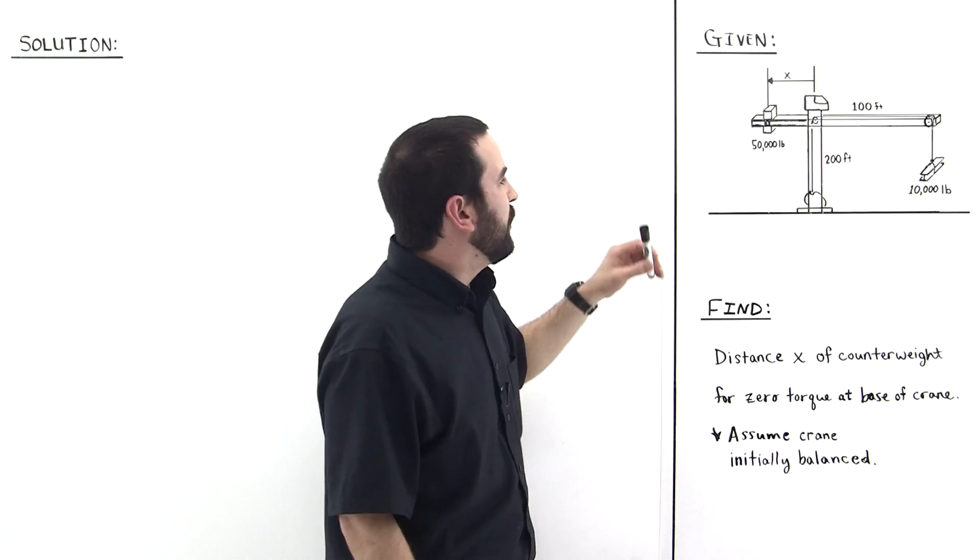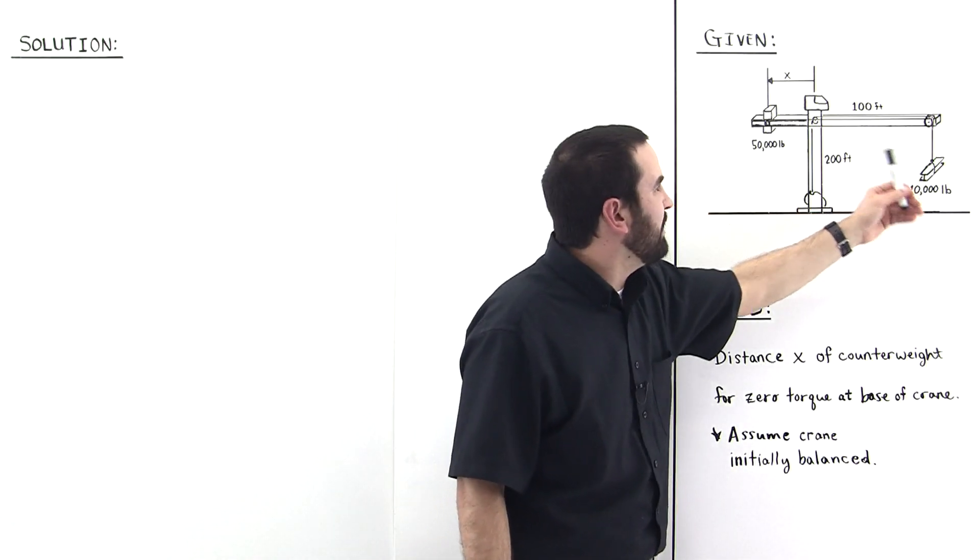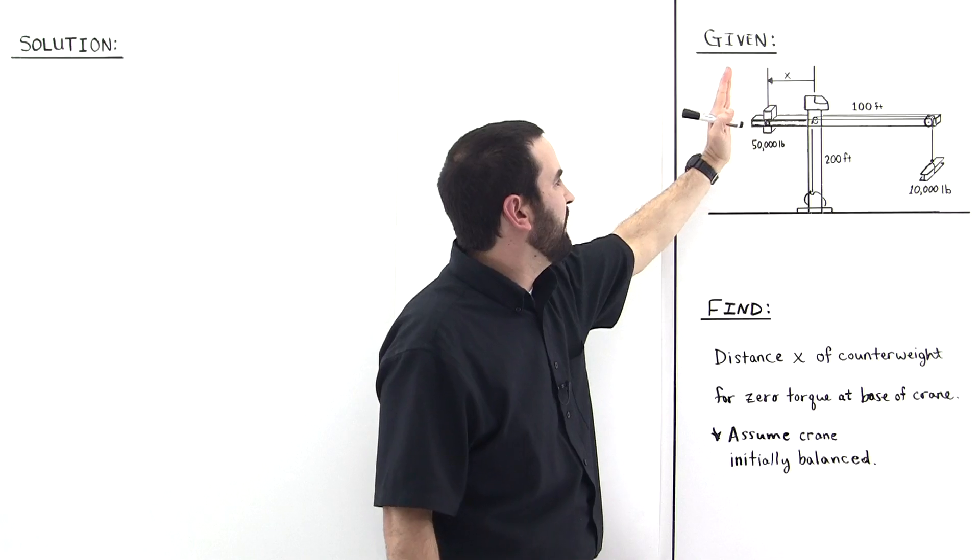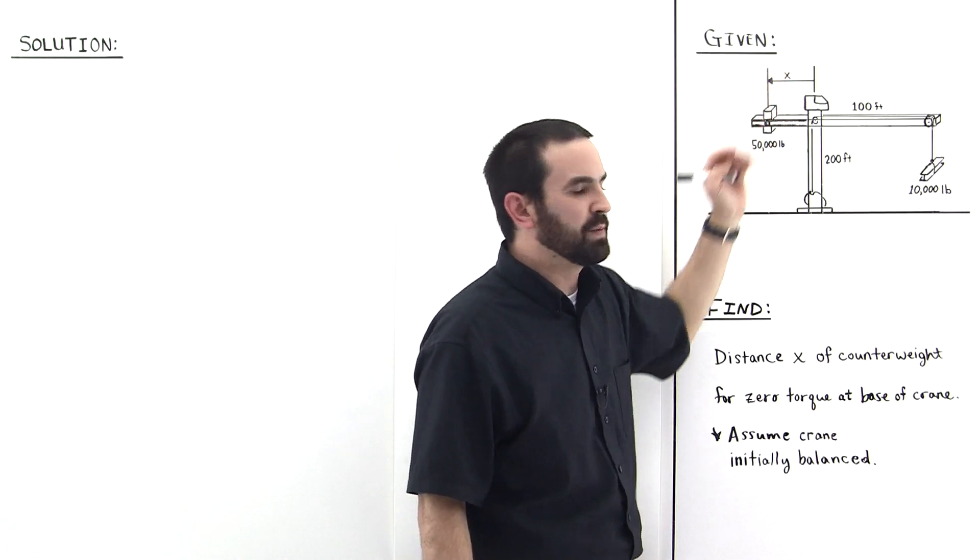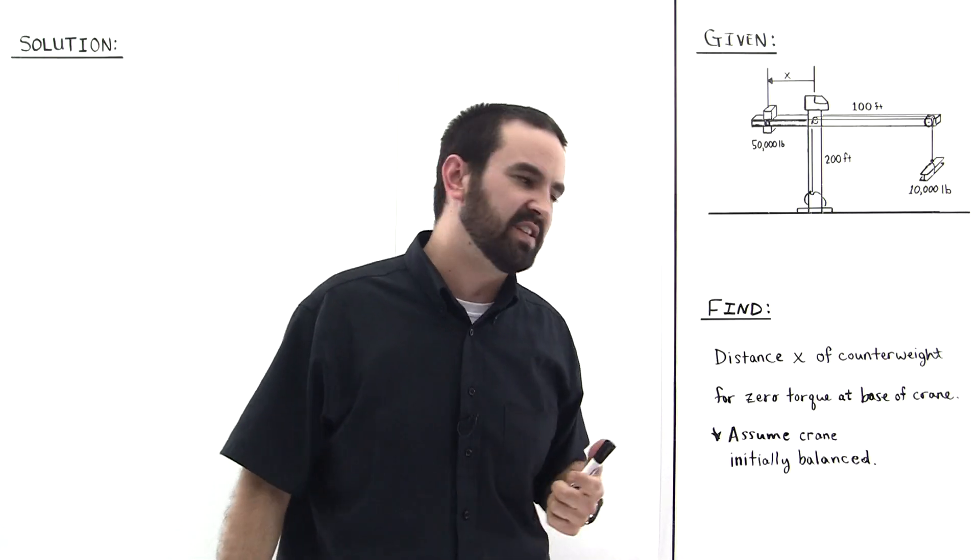And so if you have a very heavy object, then you put the counterweight further away from the spine of the crane, but if you have a light object, then you put the counterweight closer to the spine of the crane. And this was the utility of this design.